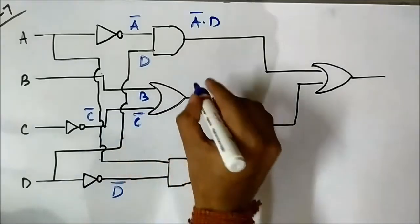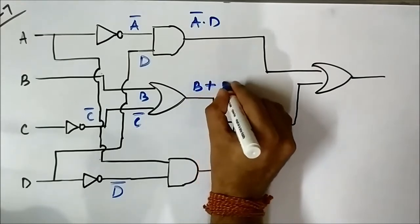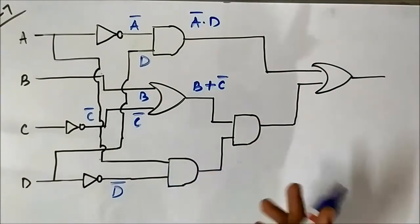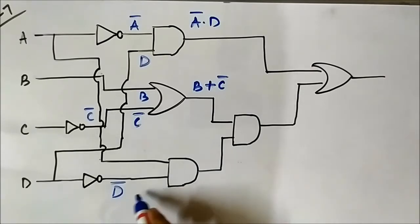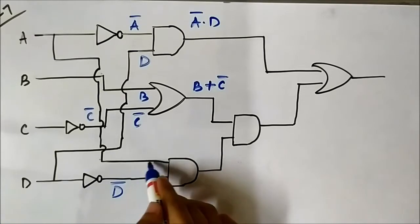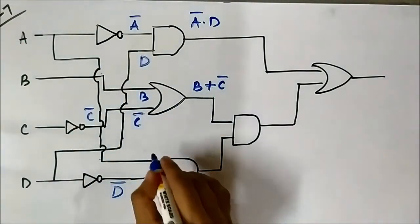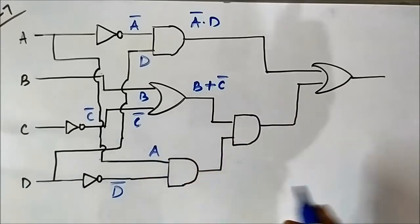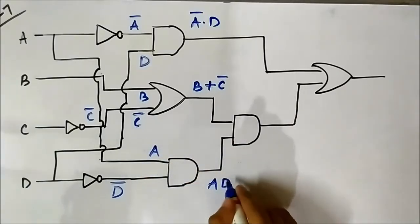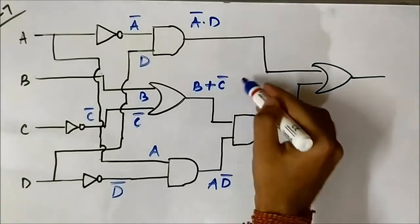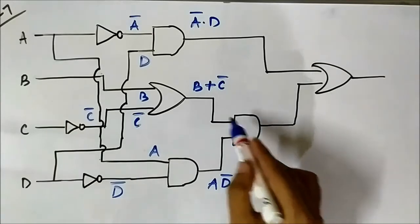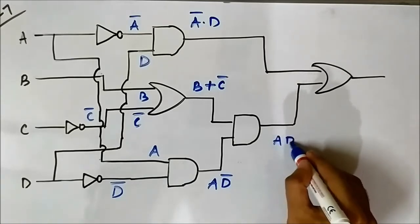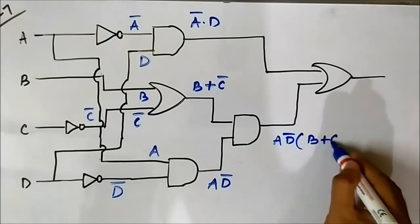The second AND gate has one input D complement and the other input is A, so the output will be A·D complement. Now the third level has only this AND gate. The two inputs are B OR C complement and A·D complement, so the output will be A·D complement · (B OR C complement).